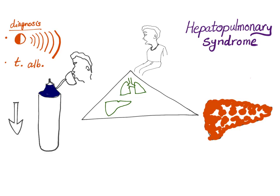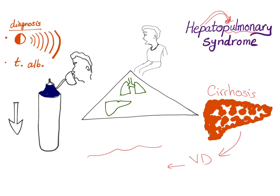Hepatopulmonary syndrome is a disease in the pulmonary system caused by liver disease. The liver is cirrhotic, and cirrhosis leads to secretion of vasodilator material, causing blood vessels to dilate. This will also lead to decreased oxygen going to the lung, leading to hypoxia, represented here by an oxygen tank symbol.